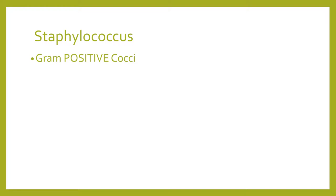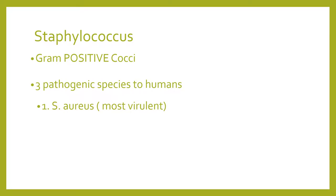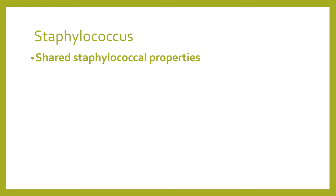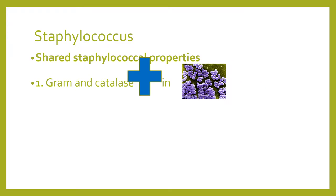What can you remember about Staph? Staphylococcus is a gram-positive coccus with three pathogenic species to humans: Staphylococcus aureus, which is the most virulent, followed by Staphylococcus epidermidis and Staphylococcus saprophyticus. Among the three species, they share common staphylococcal properties — all are gram-positive and catalase-positive, and they grow in grape-like clusters in 7.5% salt.